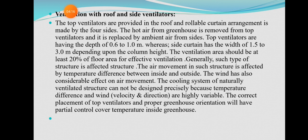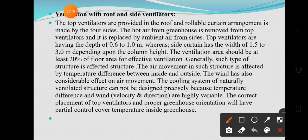The hot air from the greenhouse is removed from the top ventilators and replaced by ambient air from the side. Top ventilators have a depth of 0.6 to 1.0 meter, whereas side curtains have a width of 1.5 to 3 meters. Depending upon the column height, the ventilation should be at least 20% of the floor area for effective ventilation.